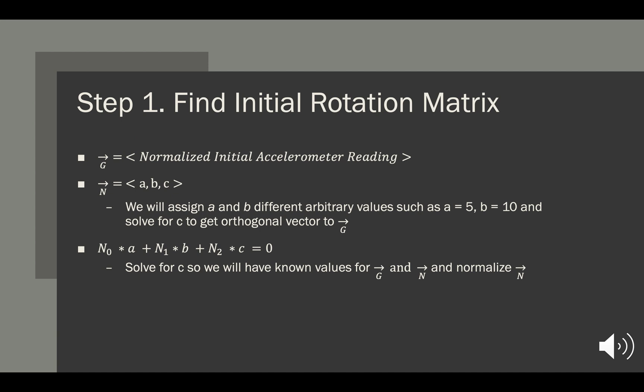So the first thing we will want to do is find the initial rotation matrix. We can use the first reading in the given accelerometer data and normalize it, and that will be our gravity vector. Then we'll also want to find a north vector, but since we don't have a north direction, we will just find a vector that is orthogonal to the gravity vector.